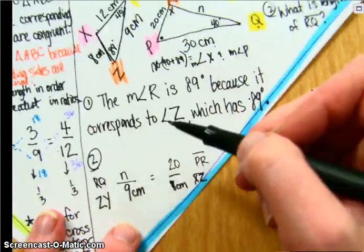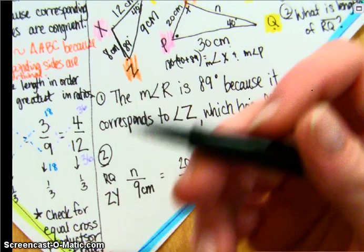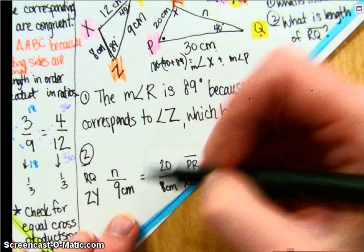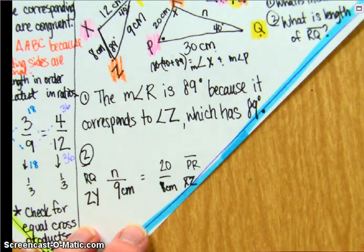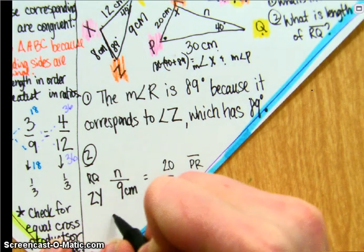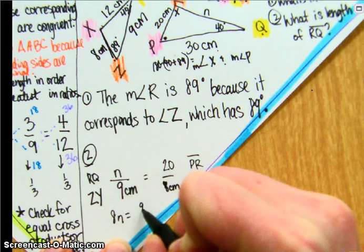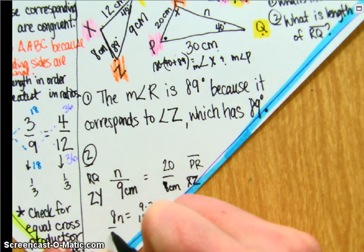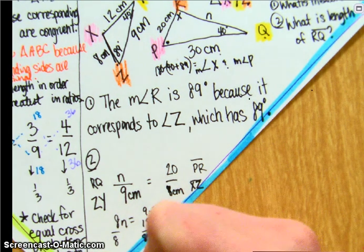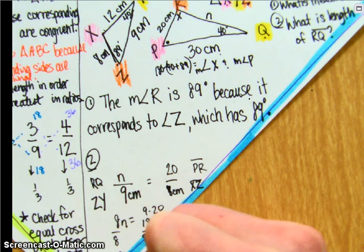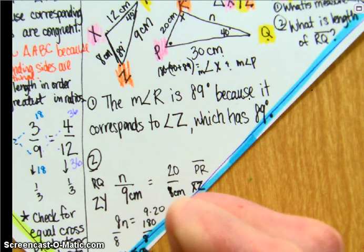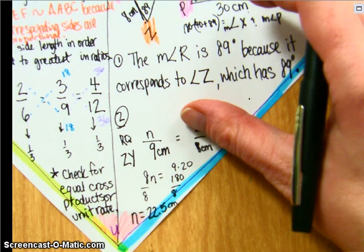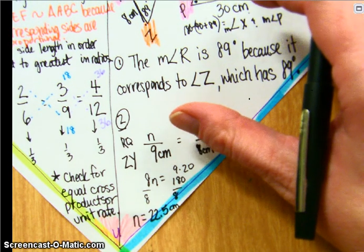Now I've got a proportion, because we know that similar figures have proportional sides. Cross multiply and divide your proportion. So we have 8N is equal to 9 times 20, which we know is 180. Divide both sides by 8, and N is 22 and a half centimeters. So the length of RQ is 22.5 centimeters.